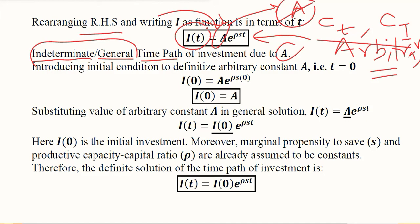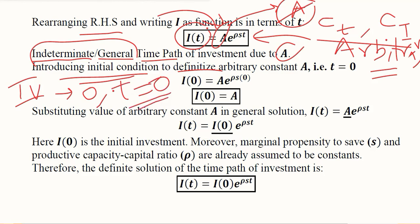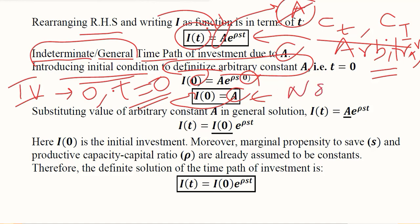To definitize the arbitrary constant, we introduce the initial condition, where the independent variable t is equal to 0. We substitute t = 0 in all relevant places. When we simplify, we extract the value of A — it equals I₀, that is the initial level of investment when no time has passed. This is the way to determine the arbitrary constant; otherwise, it would remain undetermined.